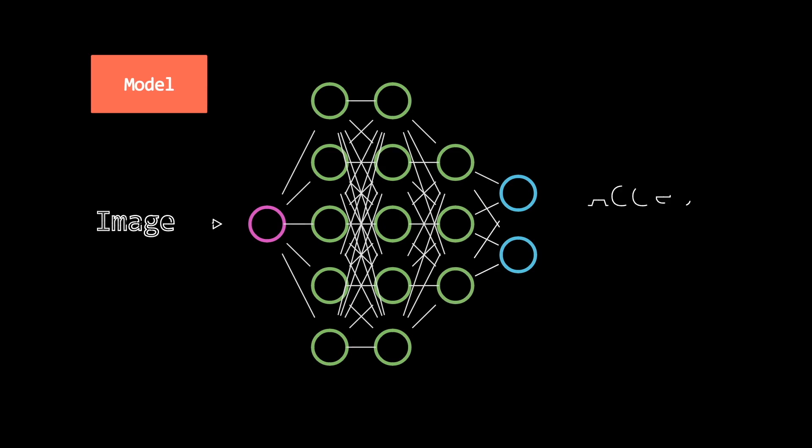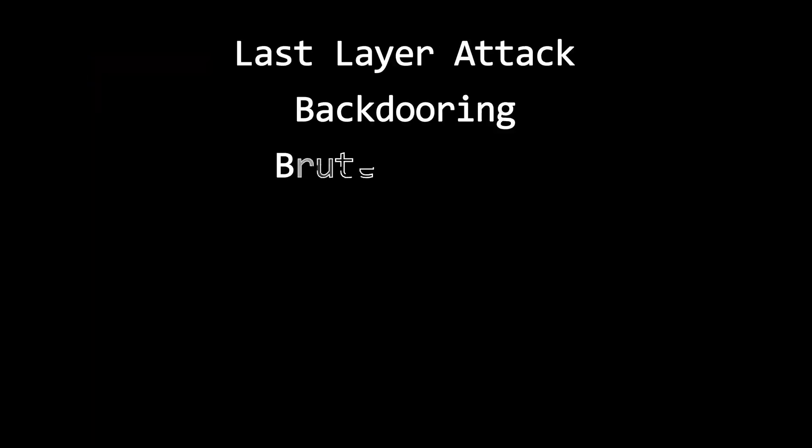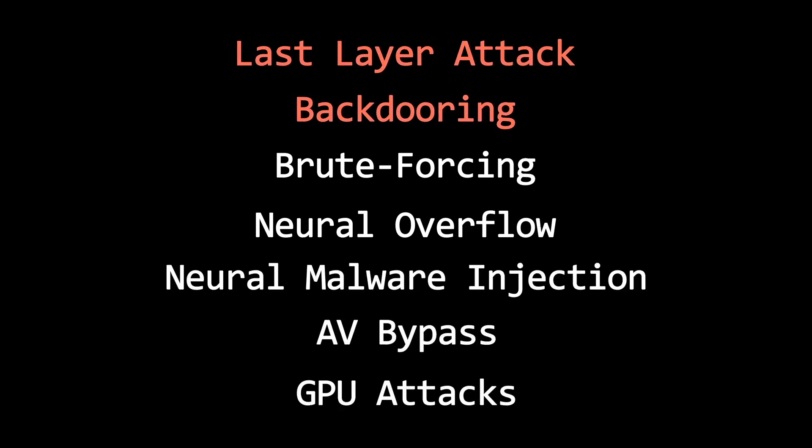Let's pick the biometric scanner as one concrete example. Let's say we have an iris scanner for security access — it scans an image and tells us access or no access. A simplified approach is to use a convolutional neural net trained with images for access and images for no access, and then whenever a new image comes in, the model classifies it. So while the database and server code are heavily protected, let's assume you somehow managed to get full read and write access to the model. We will look at the first two exploit options: last layer attack and backdooring. For more techniques, I'll point you to a good resource at the end of this video.